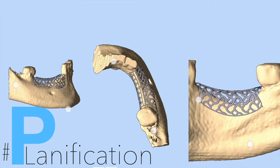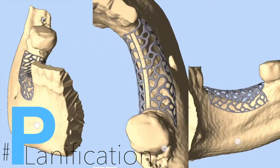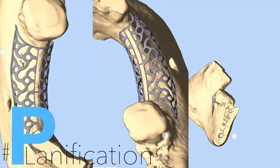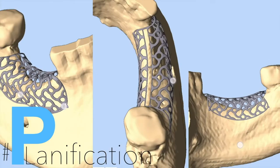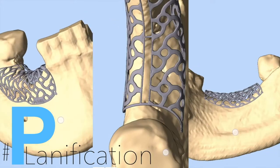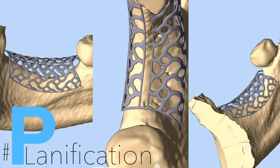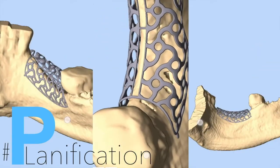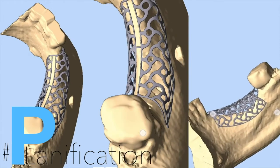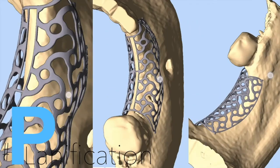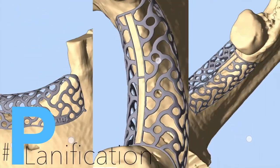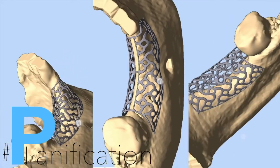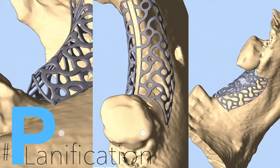After approximately 2–3 days, they send us the first planification. In this planification, it is of utmost importance to analyze the distance between the tooth and the membrane. In our protocol, we need at least 2 mm distance from the titanium mesh to the mesial and distal tooth. We also analyze whether the vertical regeneration is correct, whether the bony pegs correspond to the mesial and distal positions, and whether there are sufficient holes in the membrane to allow correct screw fixation.